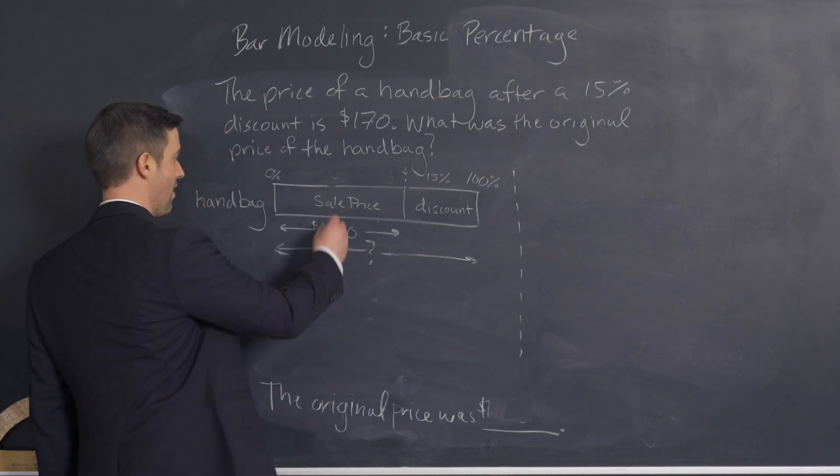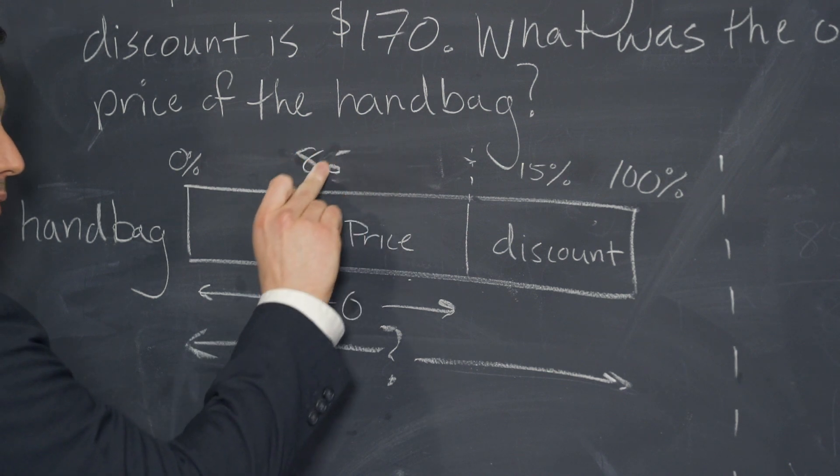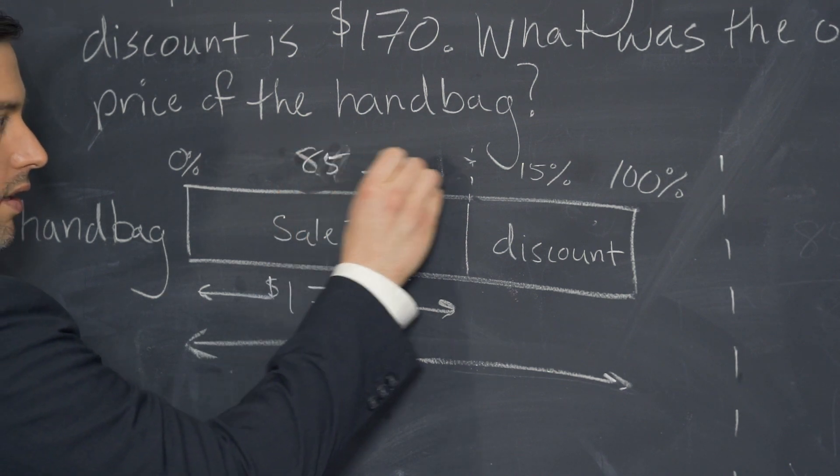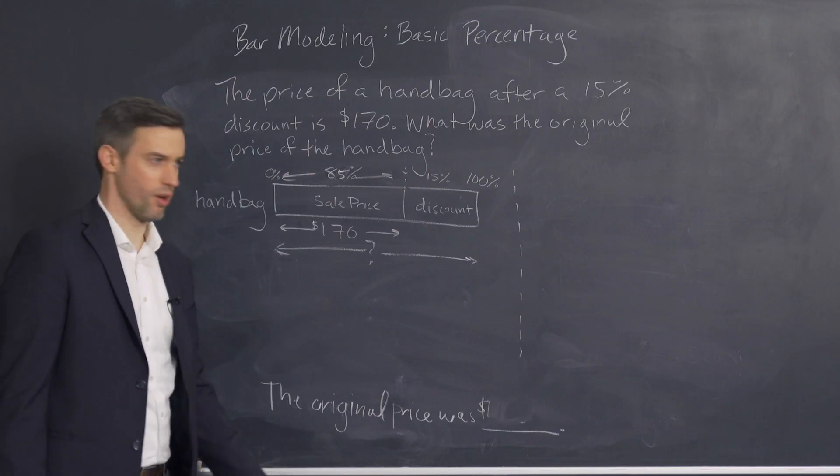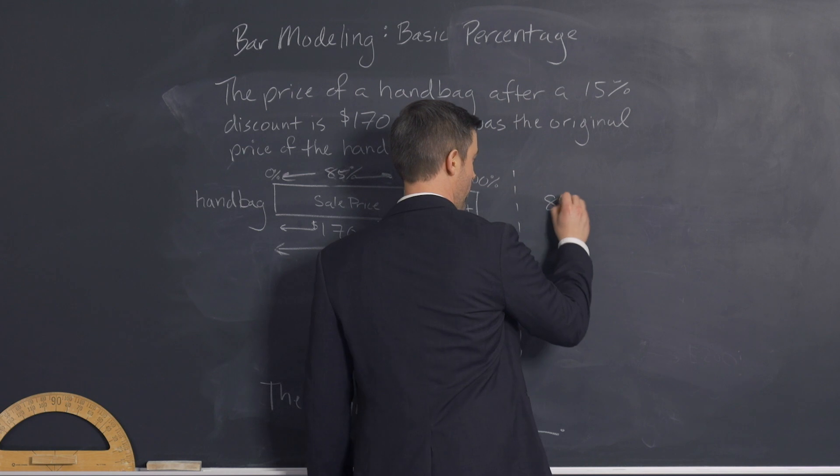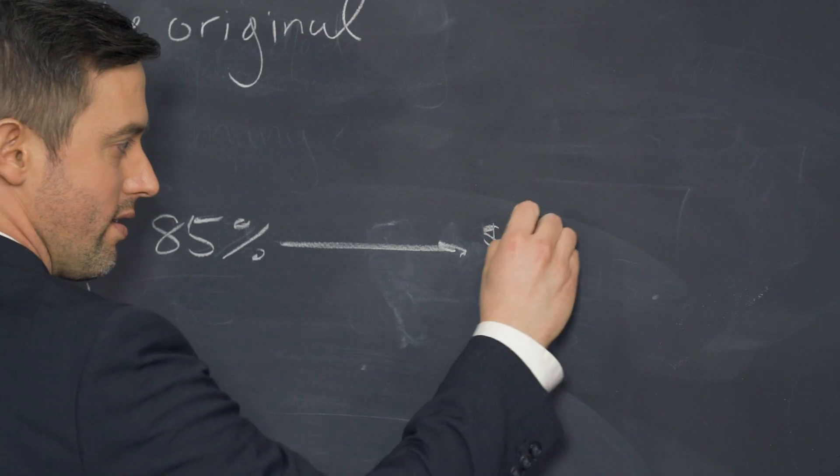Notice in this problem, you have to find as a student that 85% is the value of the sale price. So we have 85% is $170.